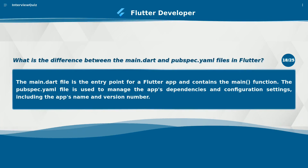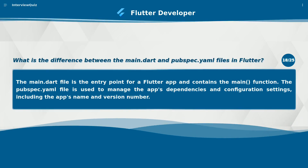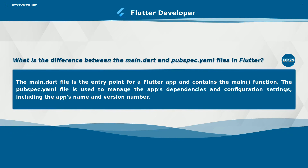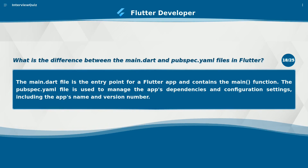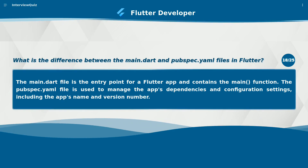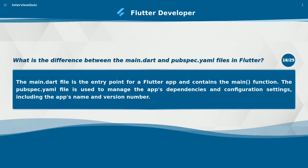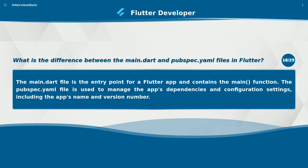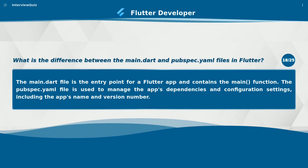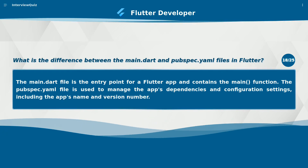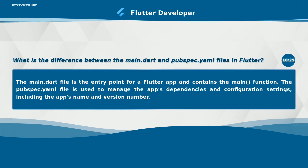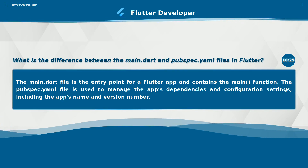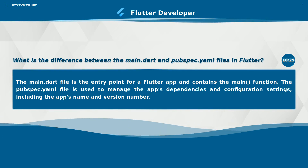What is the difference between main.dart and pubspec.yaml files in Flutter? The main.dart file is the entry point for a Flutter app and contains the main function. The pubspec.yaml file is used to manage the app's dependencies and configuration settings, including the app's name and version number.